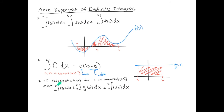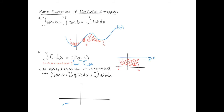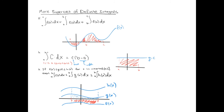One more property: if we have three functions — small, medium, and large — for x values in the interval [a, b], then the corresponding definite integrals follow the same inequality. If f is small (even negative), g is medium, and h is the biggest, then the integral of f is smallest (possibly negative), the integral of g is a positive number, and the integral of h is an even bigger positive number. For smaller functions, you get smaller definite integrals; for bigger functions, you get bigger ones.